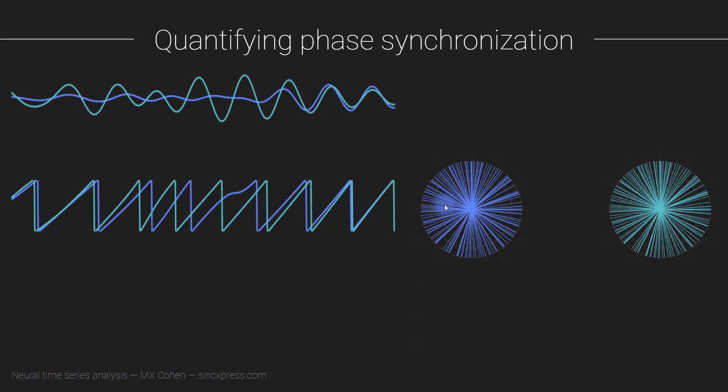But here is the thing: when we are quantifying phase synchronization, we're not interested in the phase angle distributions from either channel alone. Instead, what you do is you subtract these phase angle time series from each other, literally just subtract.